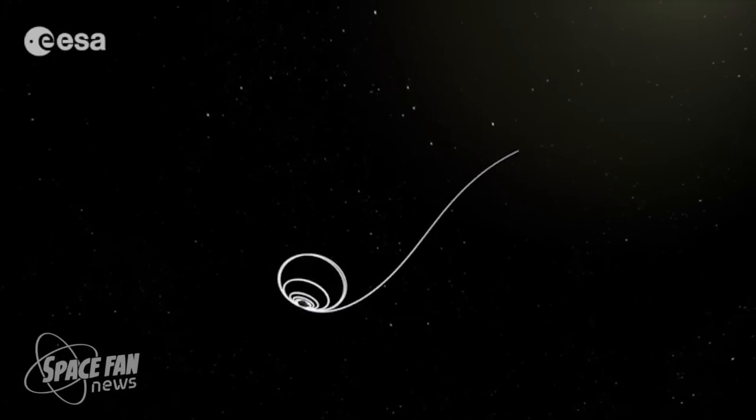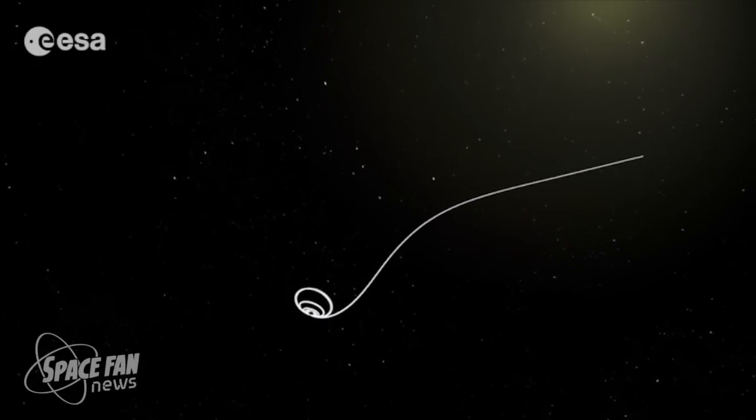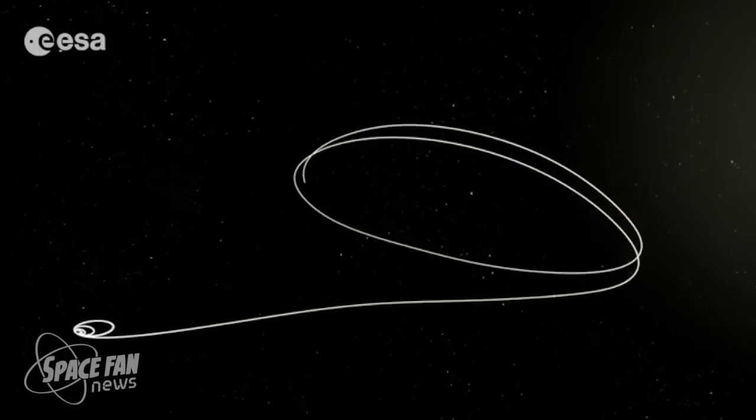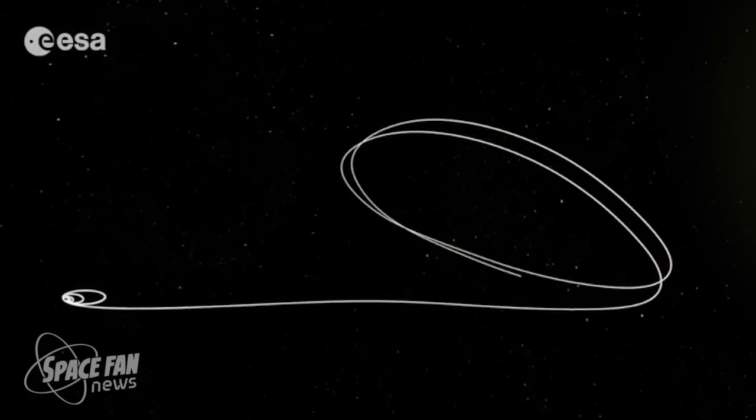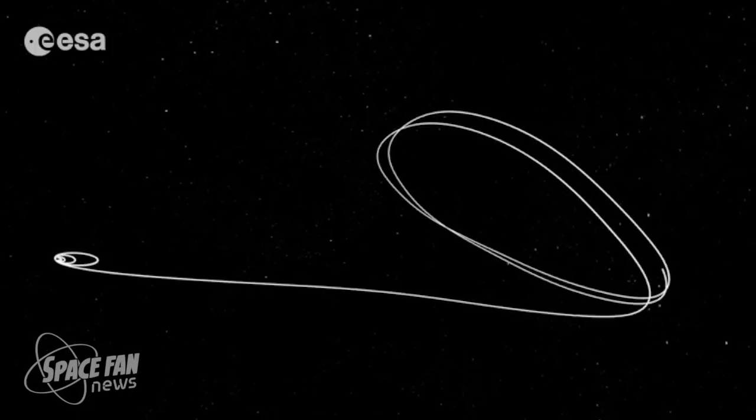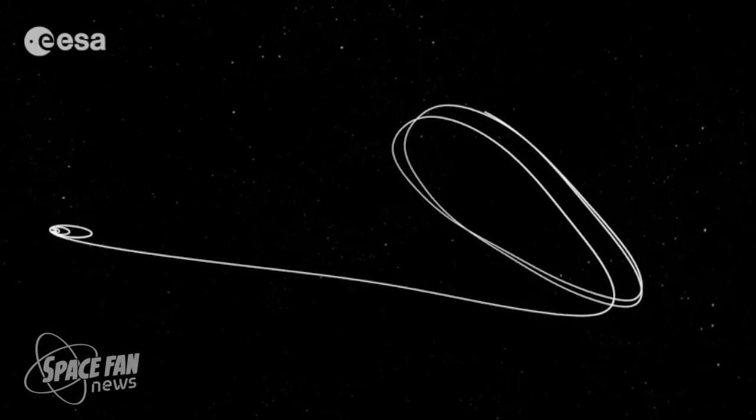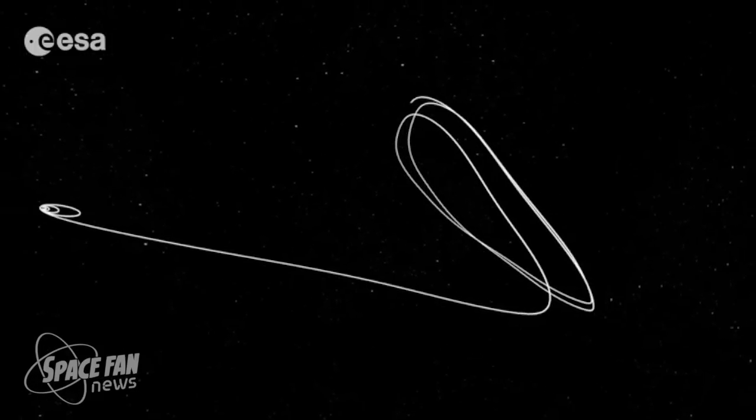LISA Pathfinder is on its way to the L1 point, some 1.5 million kilometers from Earth towards the Sun. Now the L1 point may sound familiar, this is also where SOHO is, and it has been for the last 20 years. It finally gets some company. LISA Pathfinder is expected to reach its operational orbit about 10 weeks after launch, in mid-February. After final checks, it will begin its six-month scientific mission at the beginning of March.